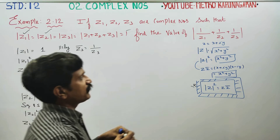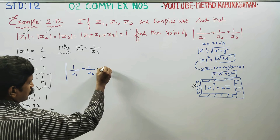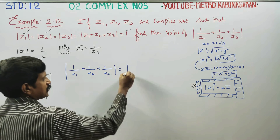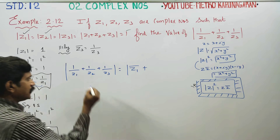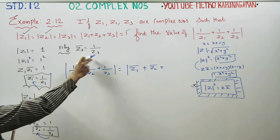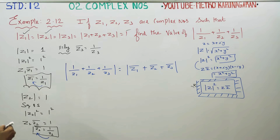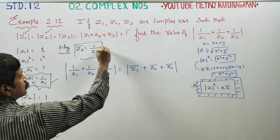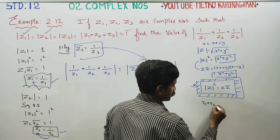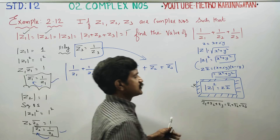Now, the main sum: 1 by Z1 plus 1 by Z2 plus 1 by Z3. Since Z1-conjugate equals 1 by Z1, Z2-conjugate equals 1 by Z2, and Z3-conjugate equals 1 by Z3, we can substitute these results. Using the property that the conjugate of a sum equals the sum of the conjugates, we get the conjugate of Z1 plus Z2 plus Z3.